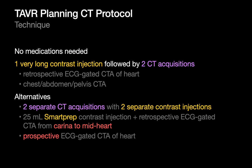There are other ways you'll see TAVR planning CTAs protocoled. Some folks do the two CT acquisitions completely separately, each with their own contrast injection. And as for the retrospective ECG-gated CTA of the heart and aortic valve, some folks choose to use only a 25 milliliter smart prep contrast injection and CT only from the carina to mid-heart to see just the aortic valve, which saves IV contrast but probably provides no additional clinical benefit.